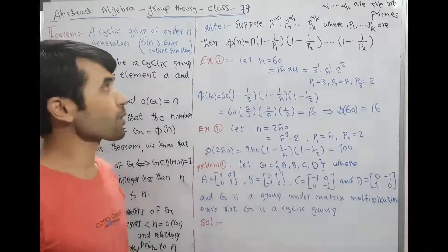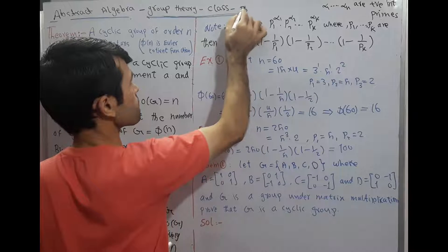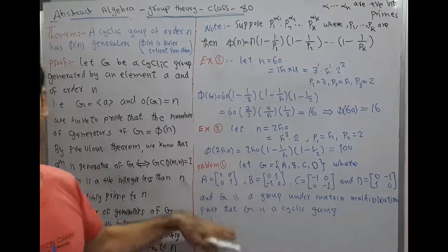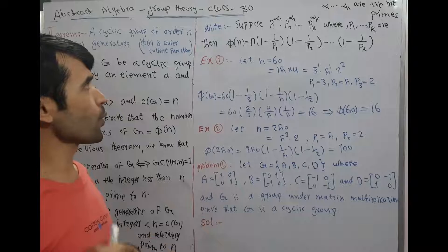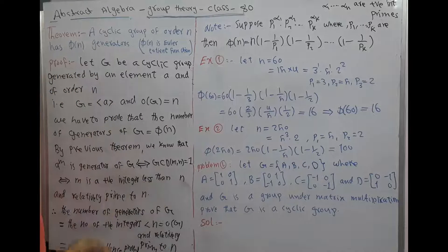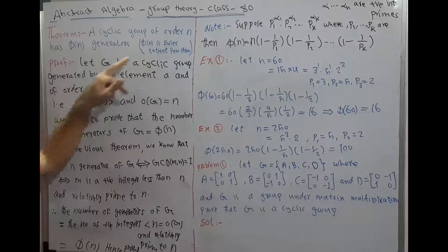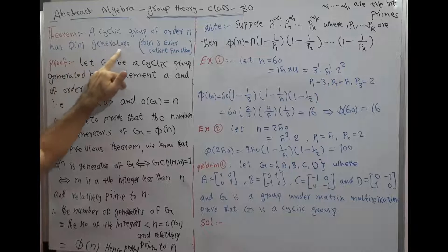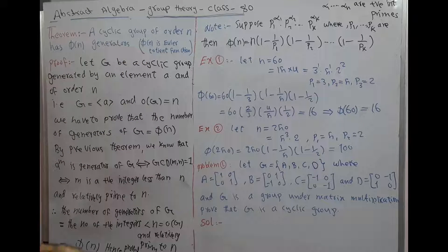Hello friend, welcome to the abstract algebra class. It is the final class of abstract algebra. Here we want to prove this theorem: a cyclic group of order n has φ(n) generators, where φ(n) is the Euler totient function, which we studied in number theory.